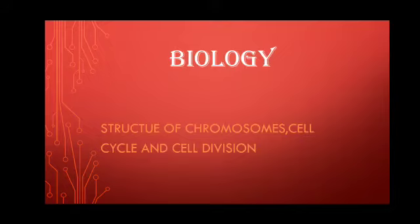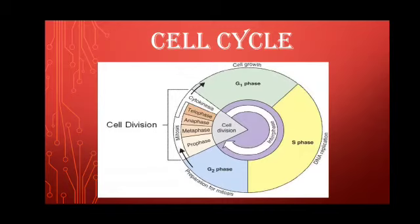The cell cycle consists of two phases, as you can see on the diagram displayed on your screen. The first is a non-dividing phase called interphase, and secondly, a dividing phase called the M phase, or simply mitosis.